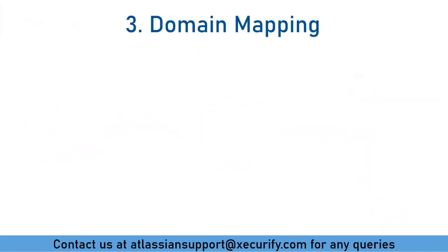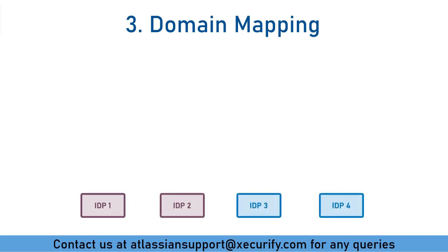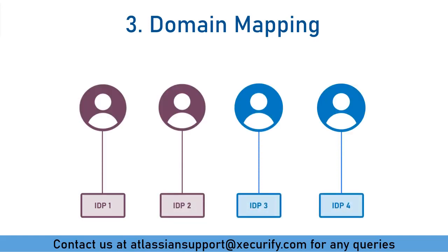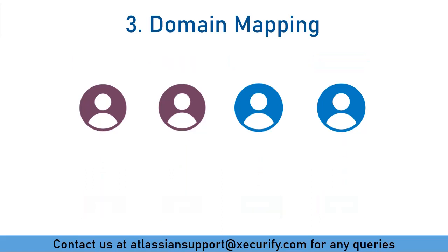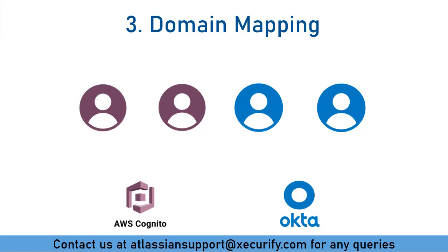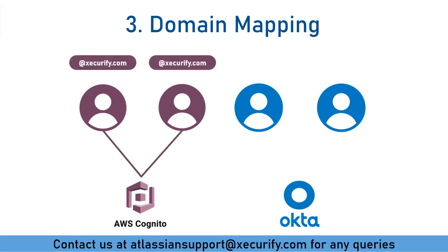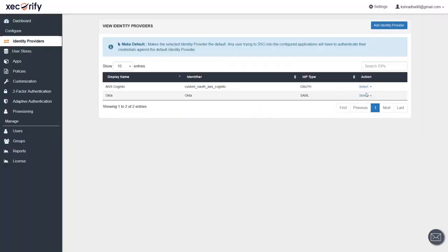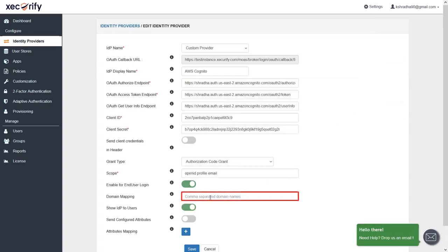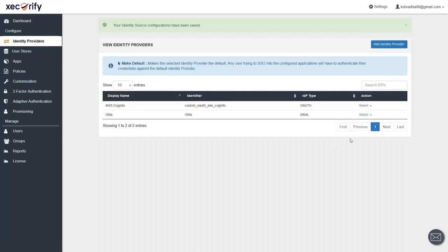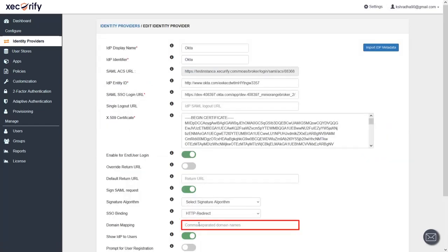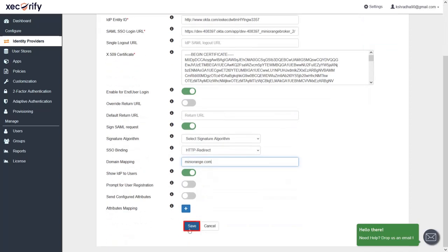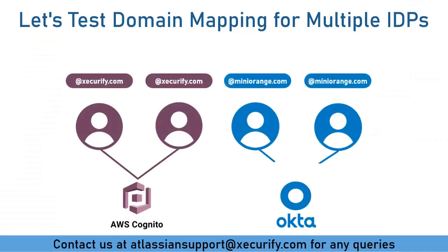Now let's see about domain mapping. If you have multiple IDPs configured, you could force users to use a specific IDP based on the domain of their username or email. For example, we will redirect users with the Xecurify domain to the AWS Cognito IDP, and users with the Minirange domain will be redirected to the Okta IDP. In the Minirange IDP Identity Providers tab, edit the AWS Cognito app, go to the Domain Mapping field, add xecurify.com for AWS Cognito and save. Then edit the Okta app, add minirange.com in the domain mapping field, and save.